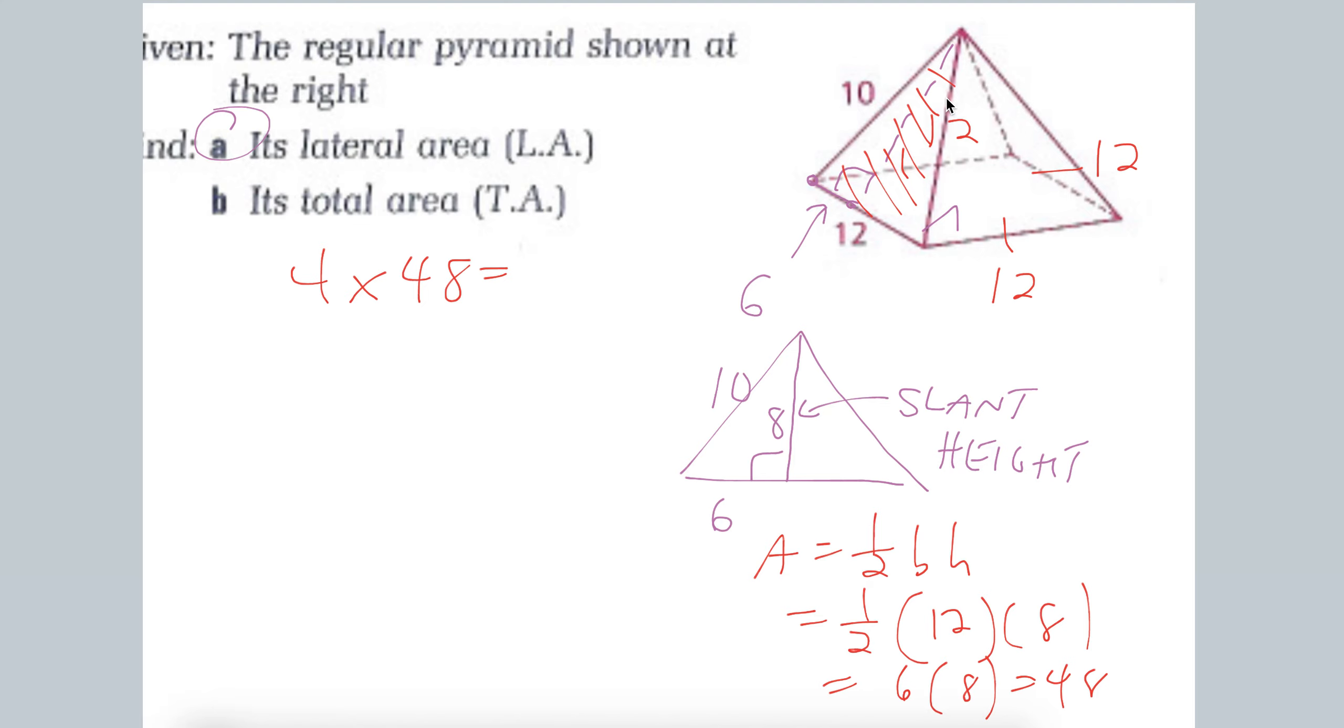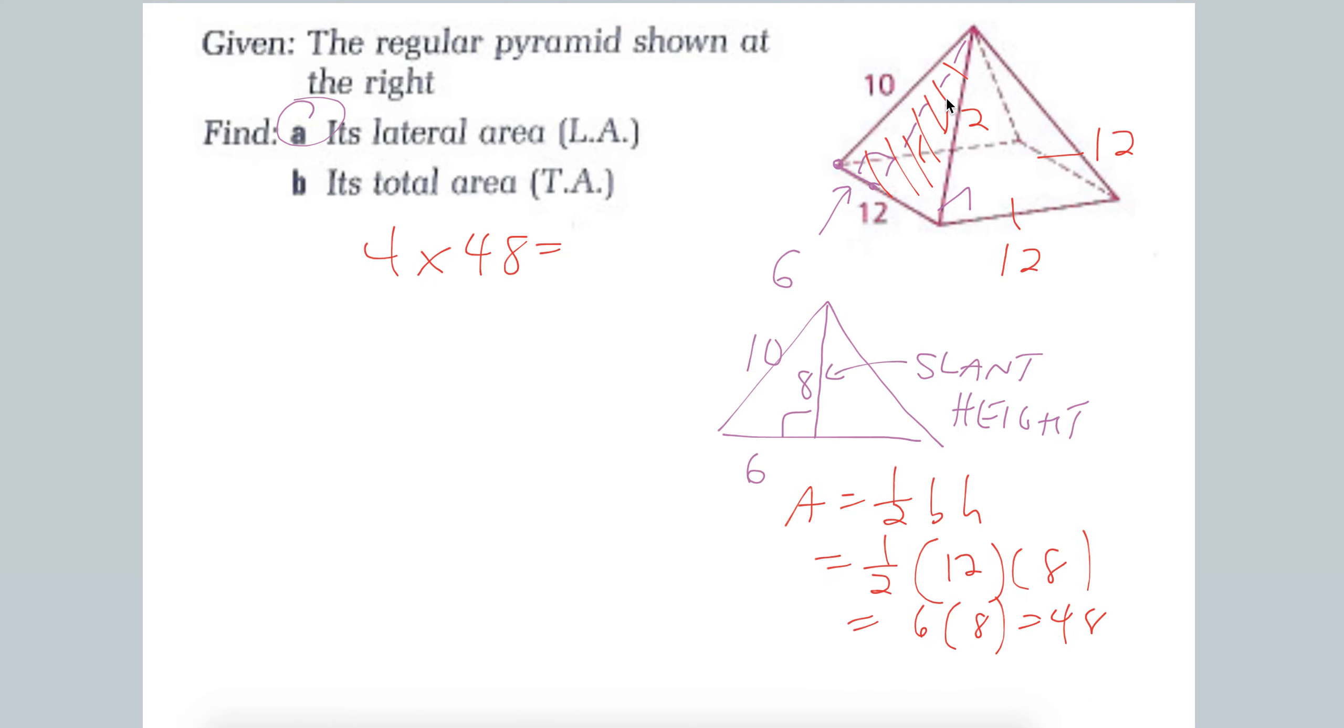So 4 times 48 should give the lateral area. Because remember again, the lateral area is the area of everything on the pyramid except for the base. We'll add that in later. So 4 times 48, we get 192 as the lateral area.